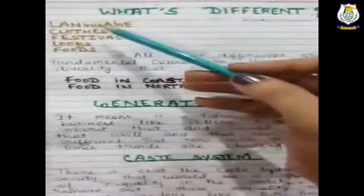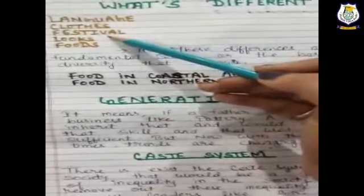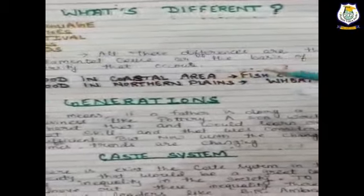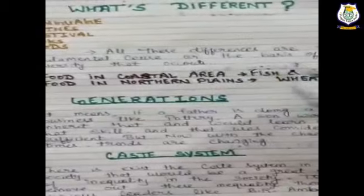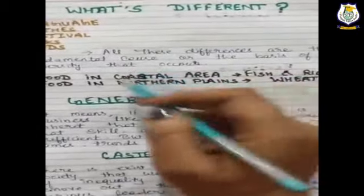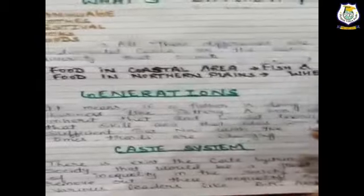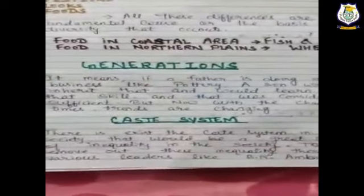We can see differences across the country in terms of language, clothes, festivals, looks, and foods. All these differences are the fundamental basis of diversity in India. In coastal areas, fish and rice are the staple food because those regions are near the ocean or sea. In the northern plains, wheat is the staple food.